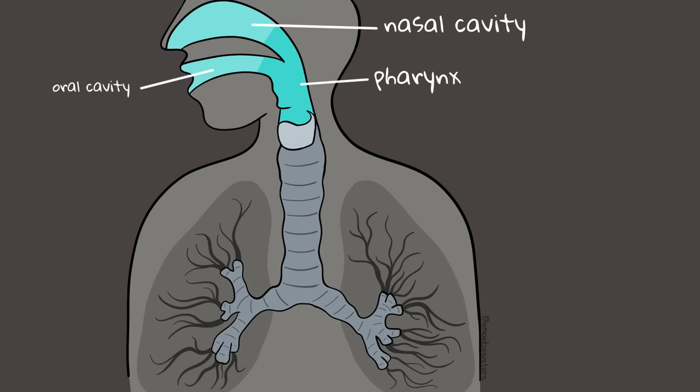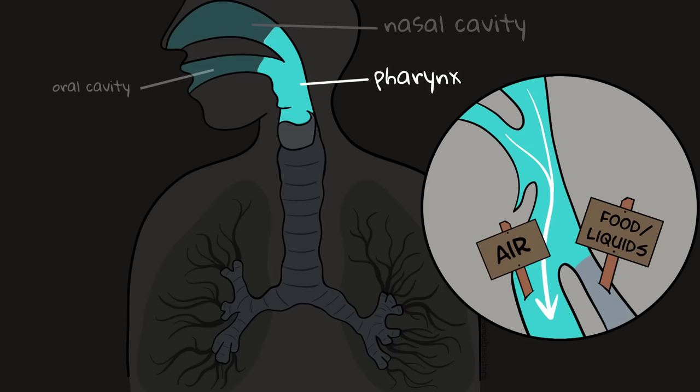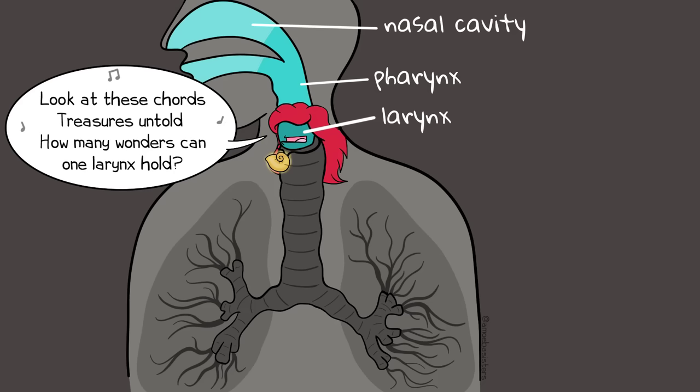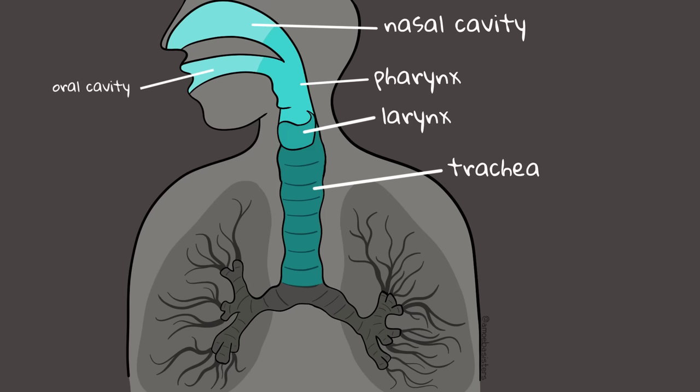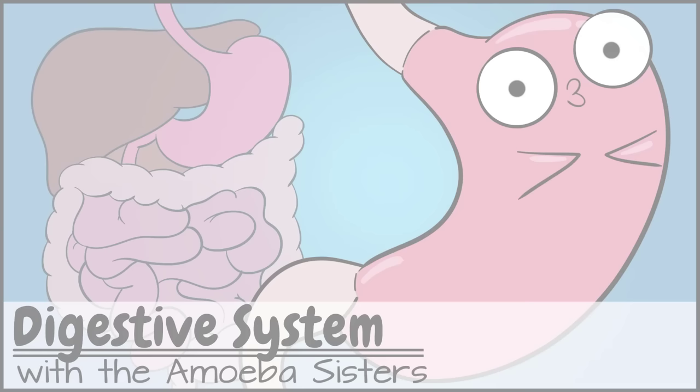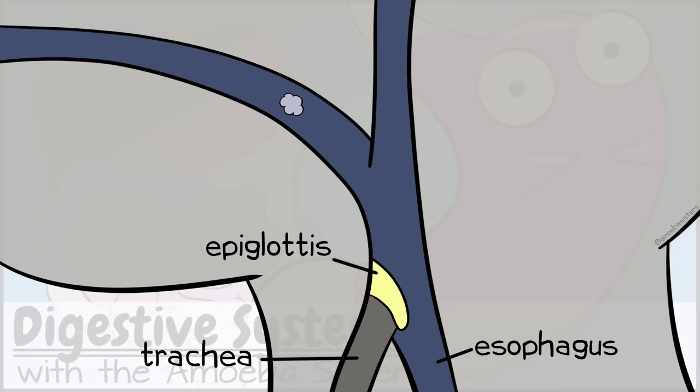We come to the pharynx, a junction of both food and air. From the pharynx, we go through the larynx, often called the voice box, then the trachea. Food should be traveling down the esophagus, not the trachea. We mention in our digestive system video that an epiglottis keeps food from going down the trachea.